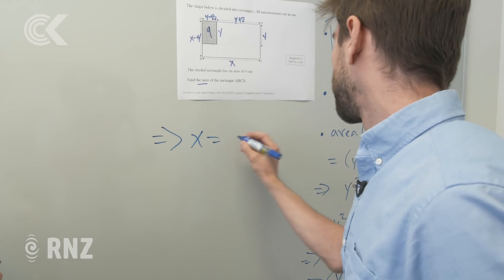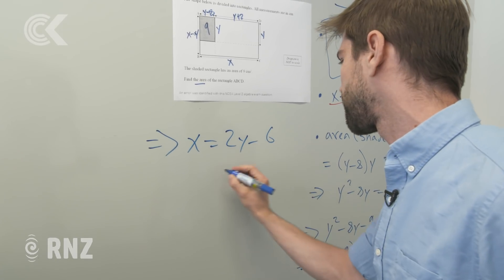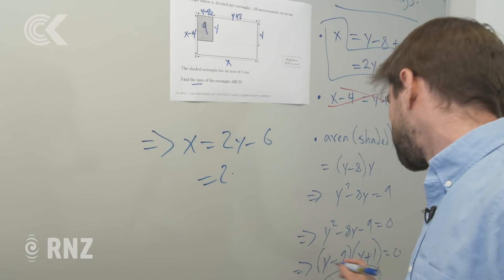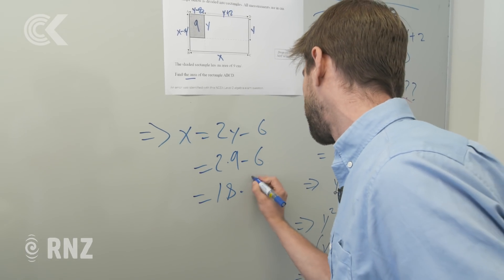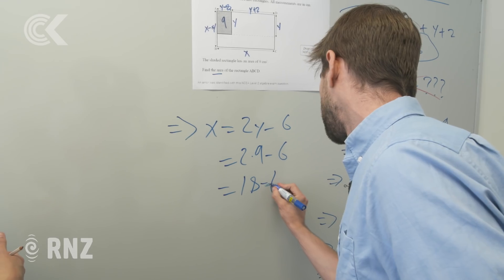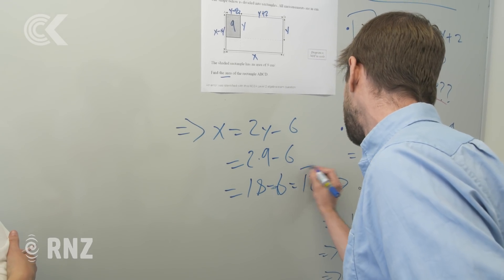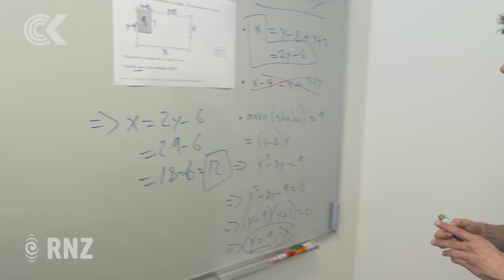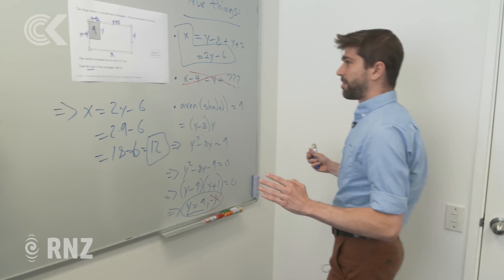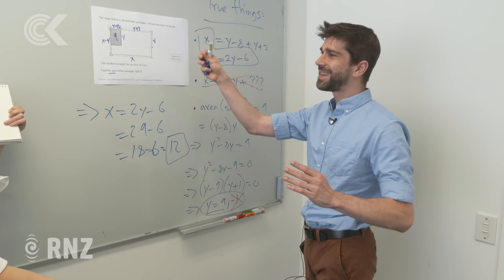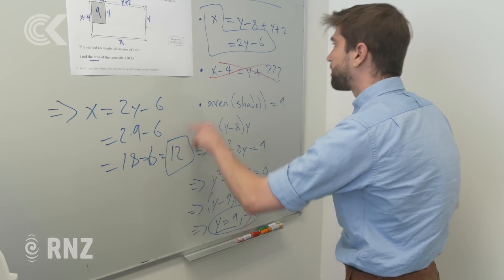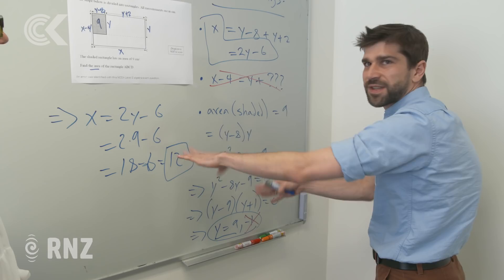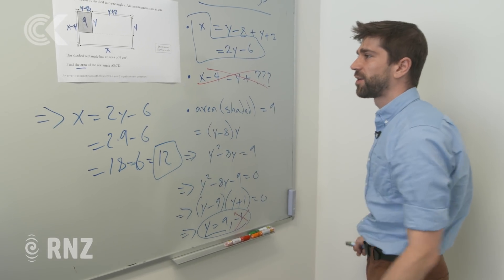So x, we said, was 2y minus 6. So 2 times 9 minus 6, 2 times 9, 18 minus 6 is 12. Is this an area yet? No, but it feels really cool, right? Like we're learning more things. And there's not really, I claim you keep trying to do true things, you get stuck here. You're like, I'm kind of out of stuff, okay?